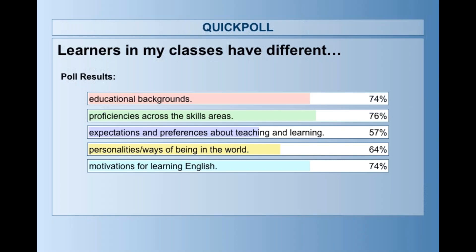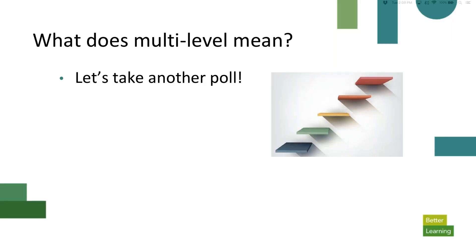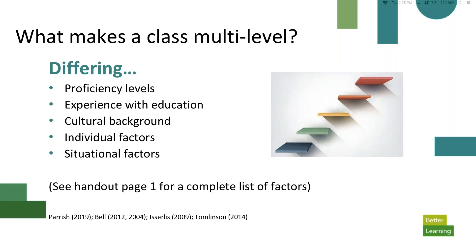It looks like you're encountering all of these issues — educational backgrounds, proficiencies, all of these are critical. Maybe the one that doesn't rate quite so highly is expectations and preferences for teaching and learning, but all of these seem to be critical issues in your settings. So we're going to think about how to take a broader look at multi-level instruction, look beyond language proficiency, and make sure our tasks, content, and materials address the needs of a very broad range of students. If you downloaded the handout, on page one there's a complete list organized by proficiency, experience with education, cultural background, and individual and situational factors.